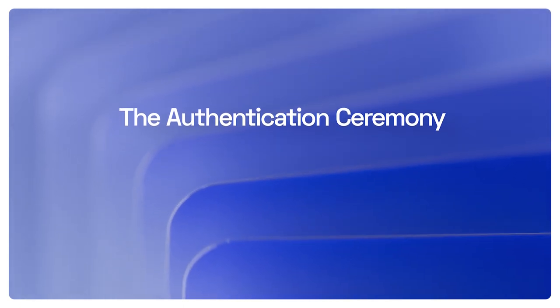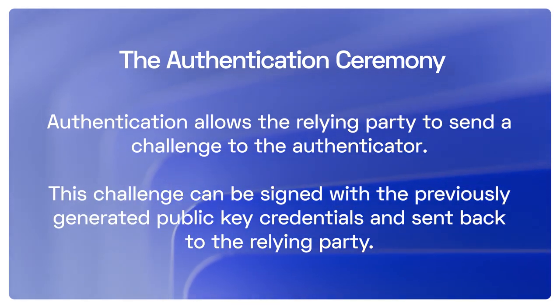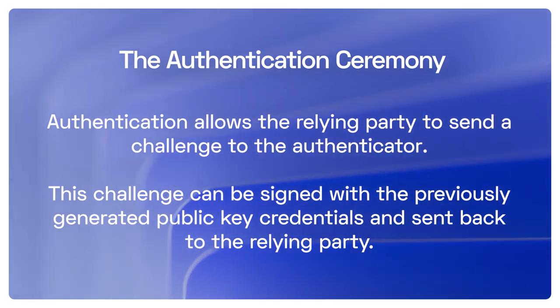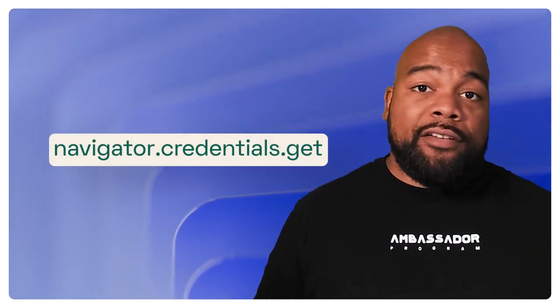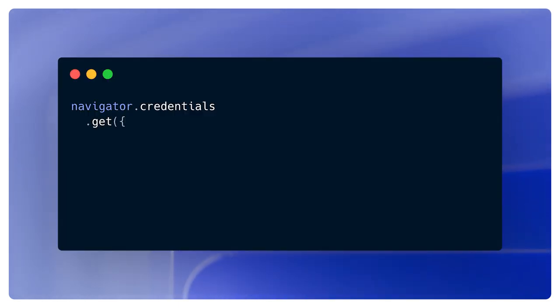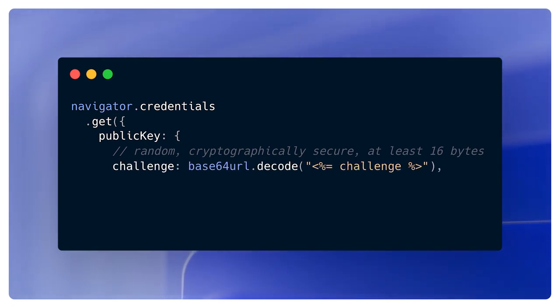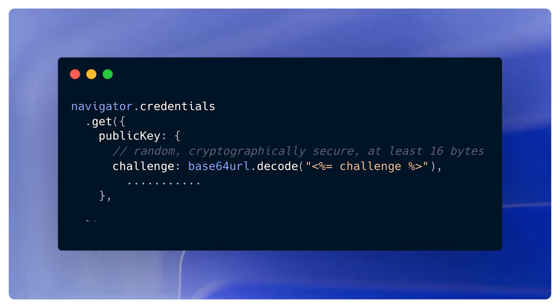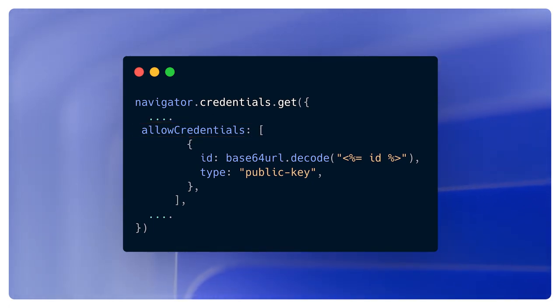Now let's talk about the second ceremony in WebAuthn, which is called authentication. Authentication allows the relying party to send a challenge to the authenticator. This challenge can be signed with the previously generated public key credentials and sent back to the relying party. In the authentication ceremony, we use the navigator.credentials.get function. We still pass in the public key object and the challenge, which is again a random number generated from the relying party. But with navigator.credentials.get, we also pass in a different property called allowCredentials — a list of public key credentials that are acceptable to the relying party.